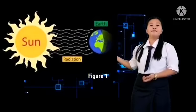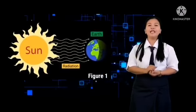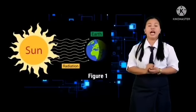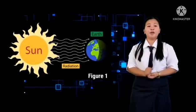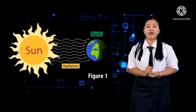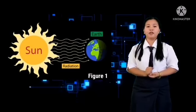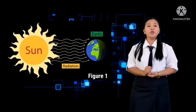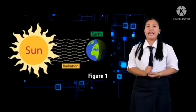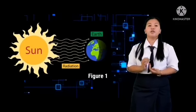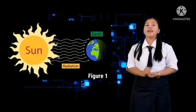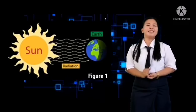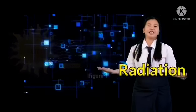In Figure 1, the heat from the sun travels by waves towards the earth, which will absorb the heat so the earth becomes warm. This process is called radiation.